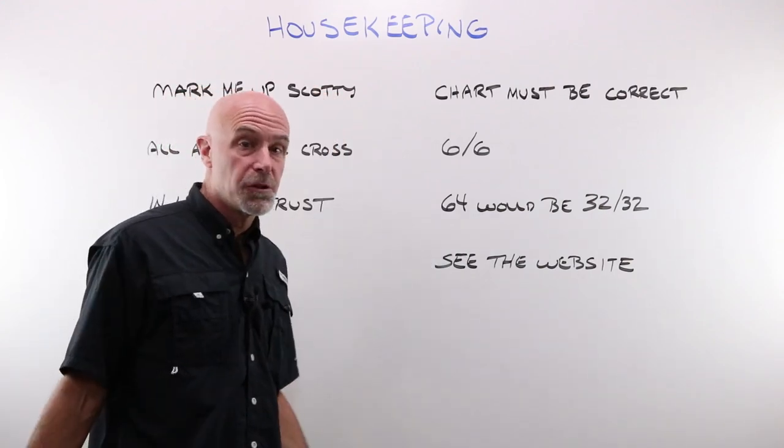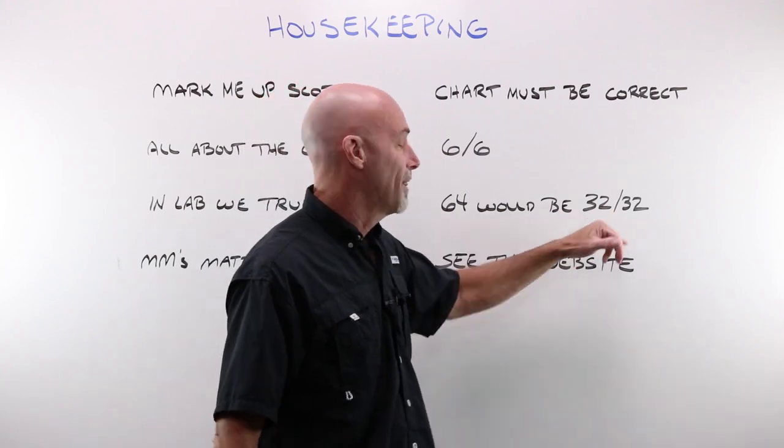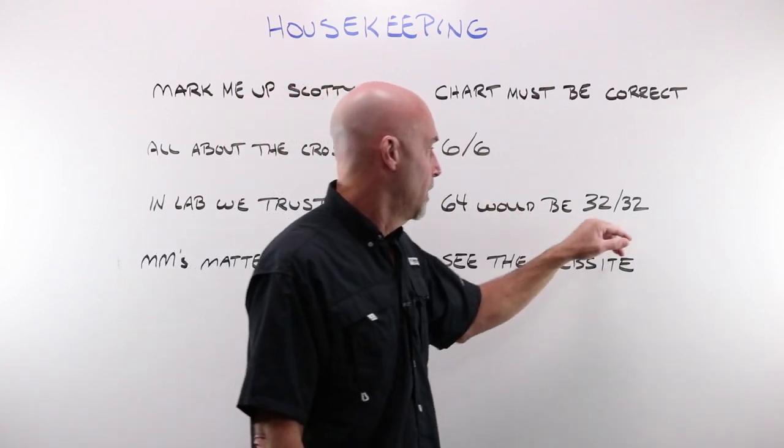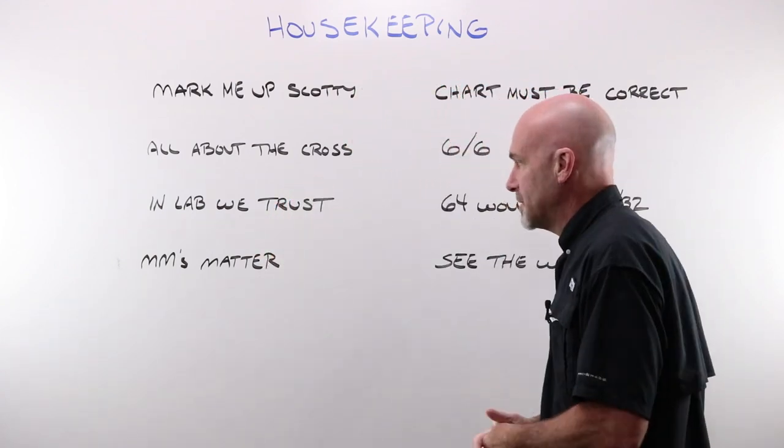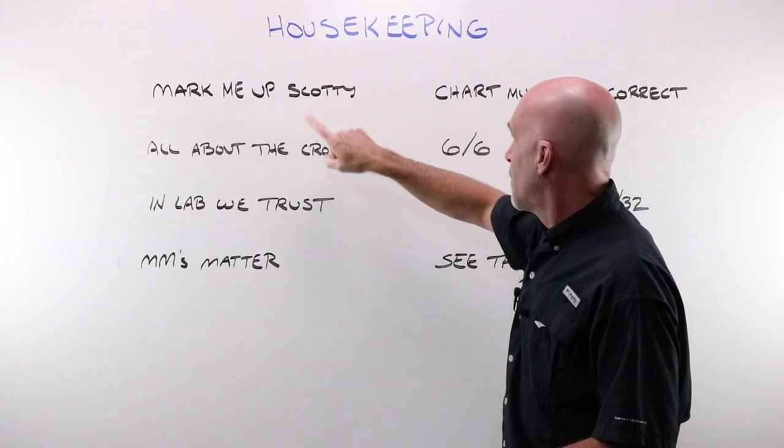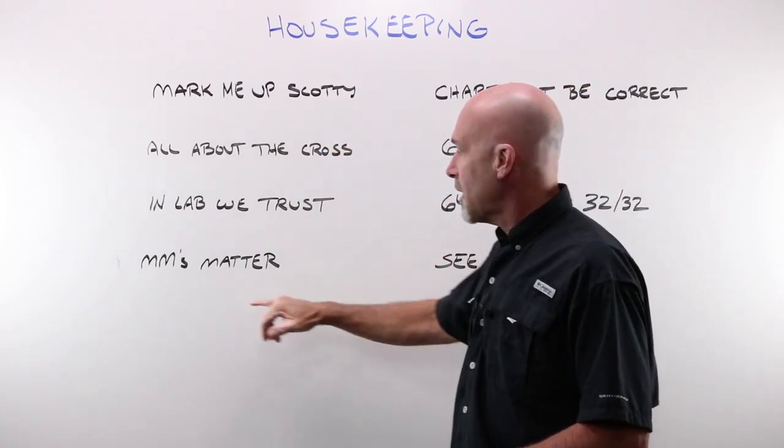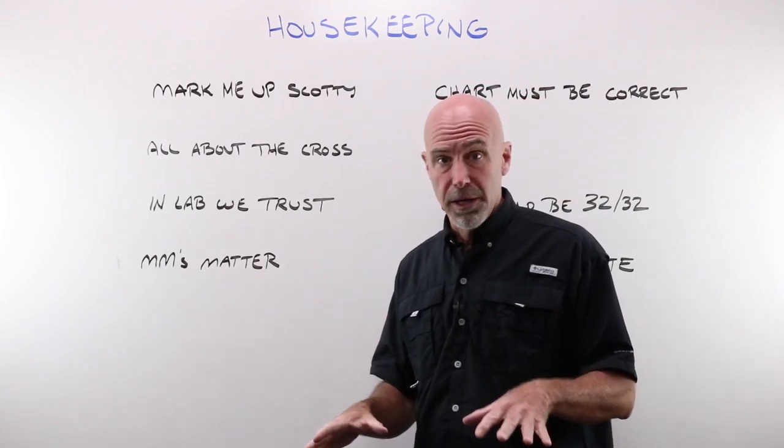We do always use monocular PDs. If someone had a perfect 64, you would still write it and think about it as 32-32. And there are all kinds of reasons about that that I go into on the website. Marking it up correctly, using the right chart, using monocular PDs. Why?